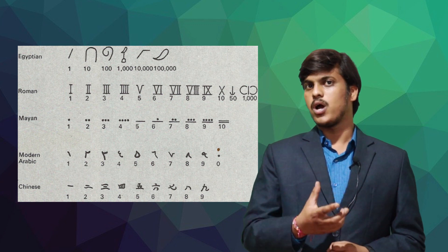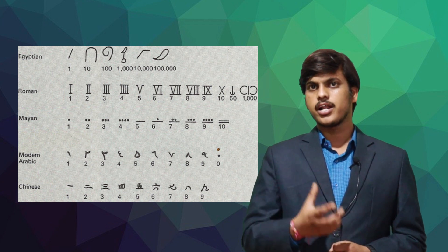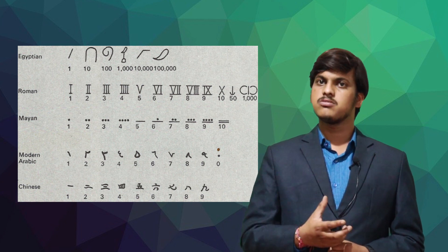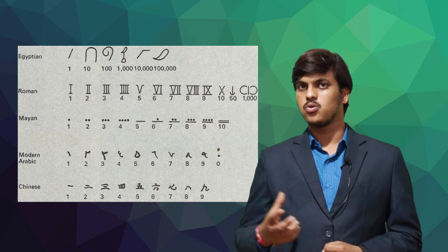Example: one, a line; ten, a rope; hundred, coil of rope; thousand, water lily and so on.